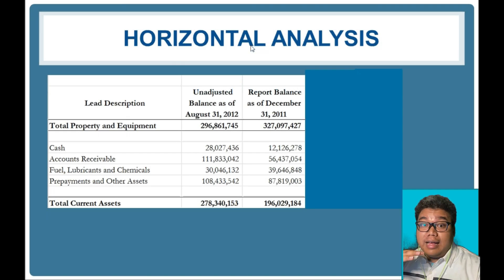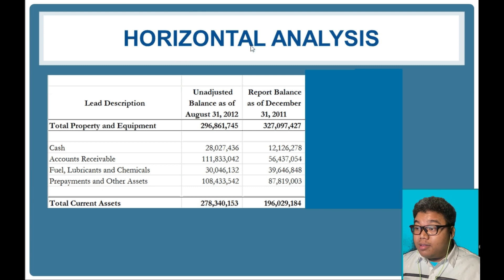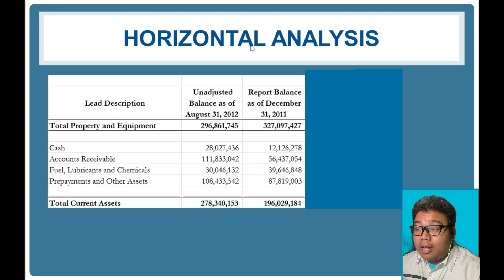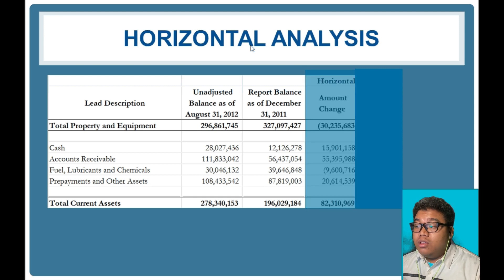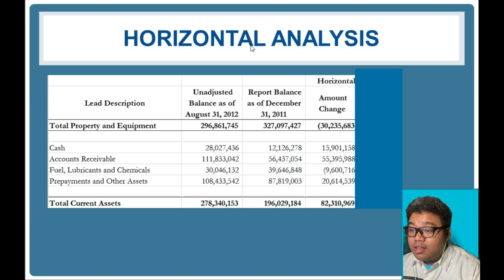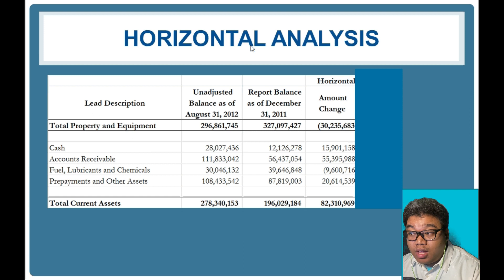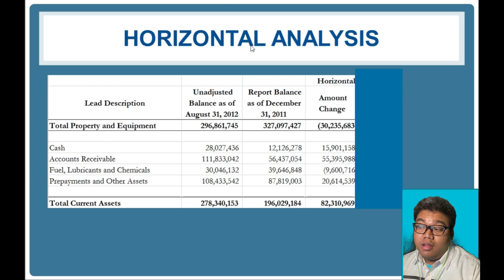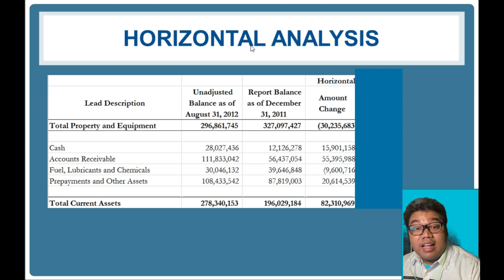Basically it is a simple calculation. If we look at this example — a sample financial statement from the SEC — we can compute the percentage changes, the percent change. For property, plant and equipment: 2012 minus 2011, so 296 million minus 127 million, we get a negative 30 million value, a negative amount.